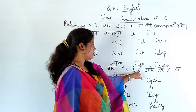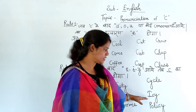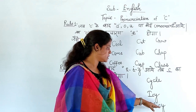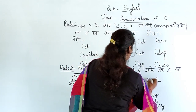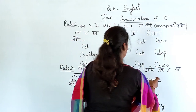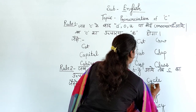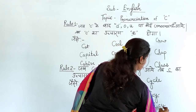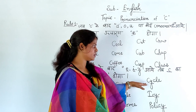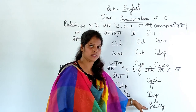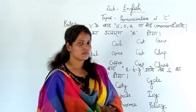Next, when Y comes after C: C-Y-C-L-E, cycle; I-C-Y, icy; P-O-L-I-C-Y, policy. Here also after C comes Y, so you will pronounce C as 'S'. This topic is very important for everyone. Okay? Thanks.